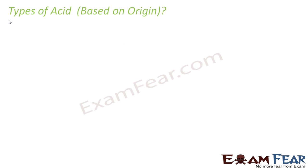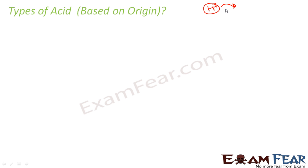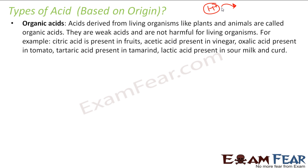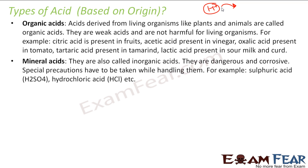We have defined acids — an acid is something which can donate H⁺ ions. We also categorize types of acids based on origin. We define them as organic acids and mineral acids — two different types based on origin.